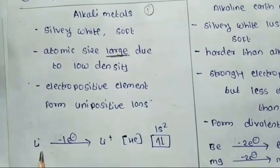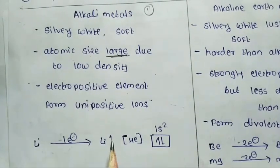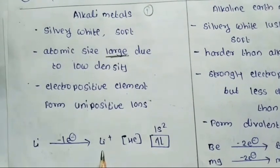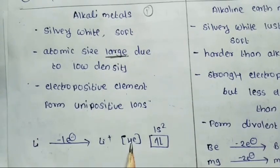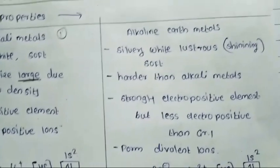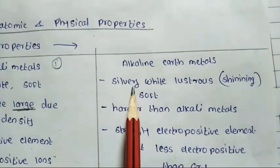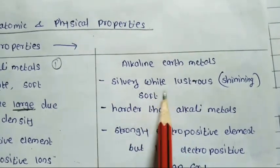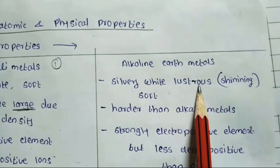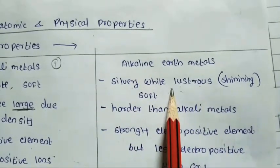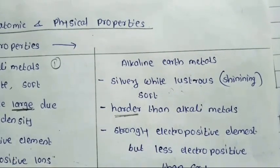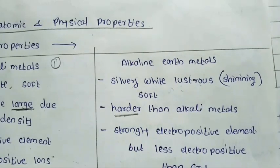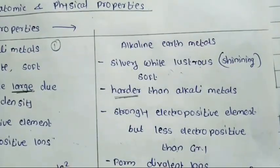For example, lithium loses one electron from its valence shell to form Li+. Li+ is isoelectronic with helium, with electronic configuration 1S2. Alkaline earth metals are also silvery white, lustrous, and soft in nature, but harder than alkali metals. Similarly, alkaline earth metals are strongly electropositive but less electropositive than group 1.